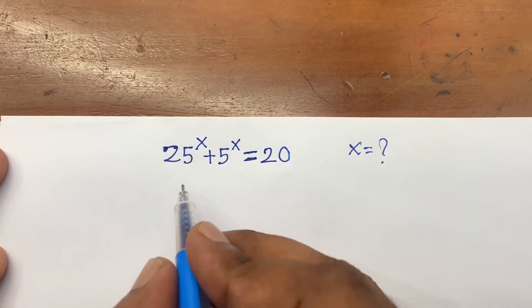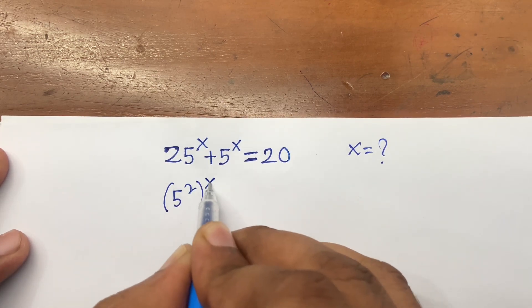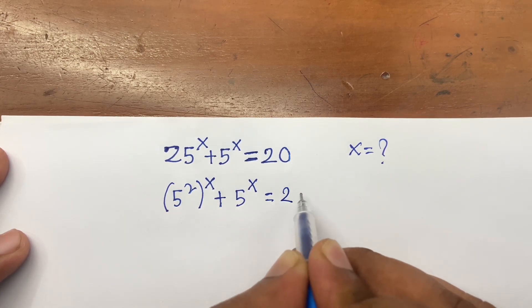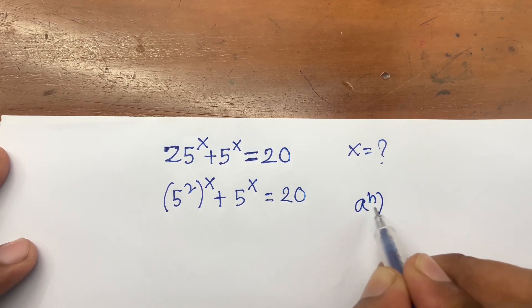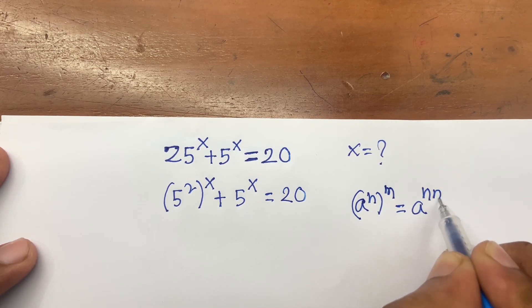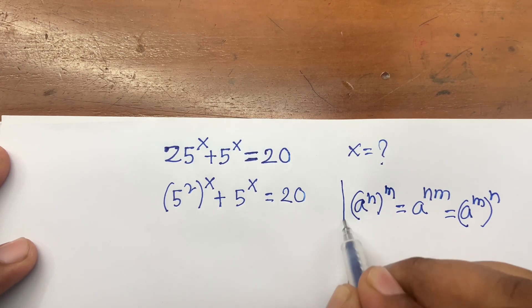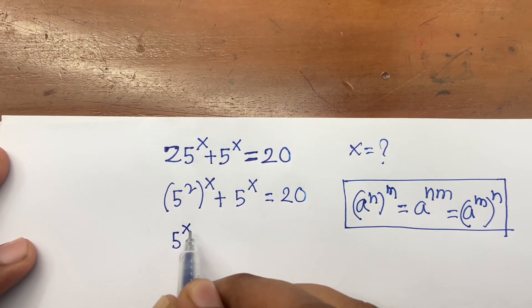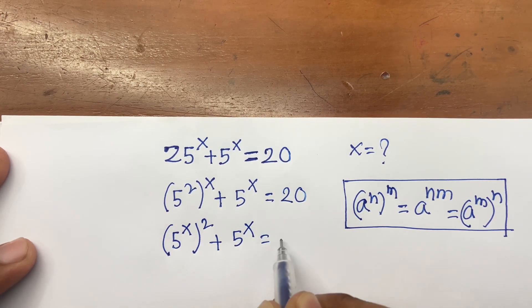Here we write 25 as 5 squared, so the equation becomes (5²)^x plus 5^x equals 20. We know the exponential rule: a to the power n, bracket power m, equals a to the power nm. Following this rule, I can write (5^x)² plus 5^x equals 20.